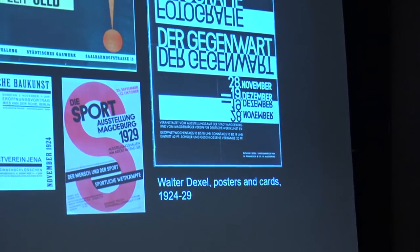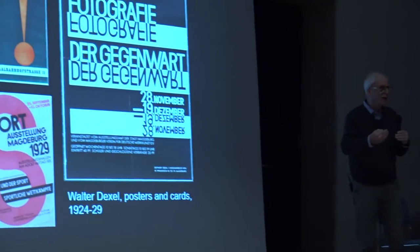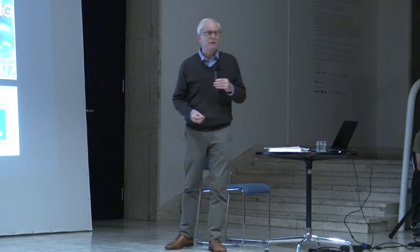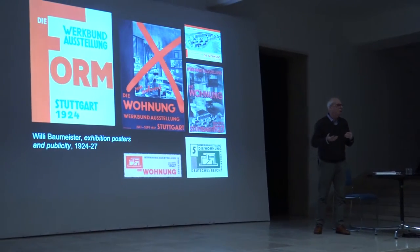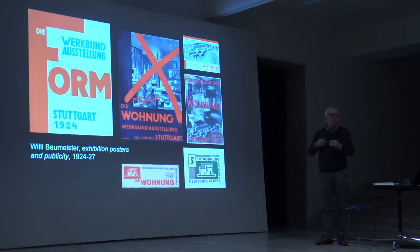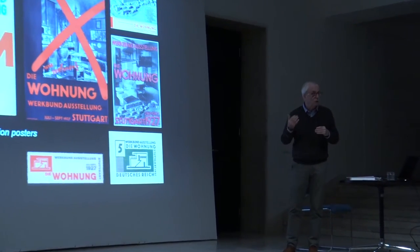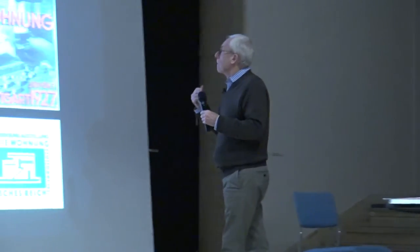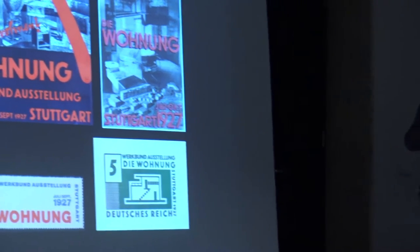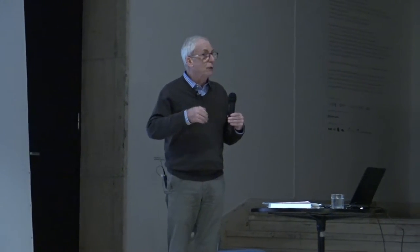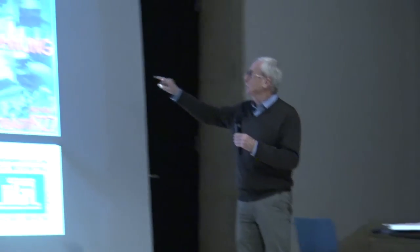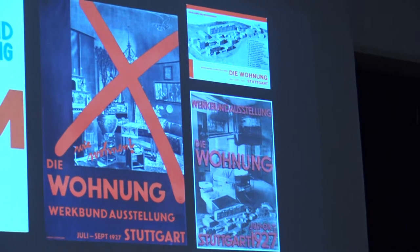This is Willi Baumeister. He began as a painter, and that early poster on the left is a kind of clumsy translation of abstract forms into rather colossal letter forms. But the more Baumeister worked as a designer producing posters, books, flyers, advertisements — particularly these posters and the graphic identity for the exhibition Die Wohnung — the more refined his approach became. Die Wohnung was the exhibition on interiors and the home that went with the famous Weissenhof-Siedlung in Stuttgart in 1927, and you can see the posters he produced for this, which fall very firmly within the repertoire of new typography.